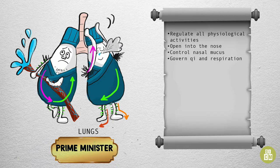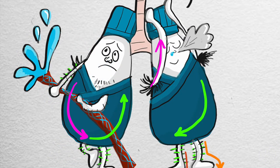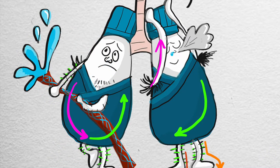Another way to remember this is to think of how the lungs are filled with cilia, which we can imagine to be the lungs' own version of little body hairs. The left minister is holding a water hose to remind us that the lungs are said to regulate the water passages. The hose is filled with veins and arteries to help us remember that the lungs control the channels and blood vessels.